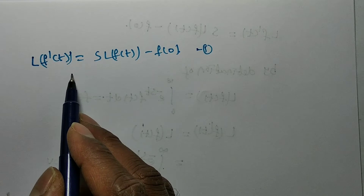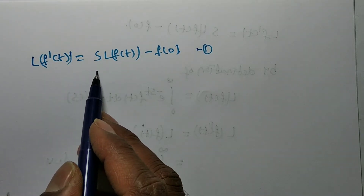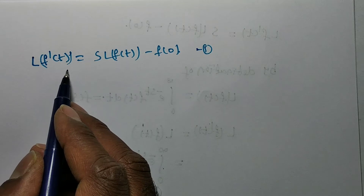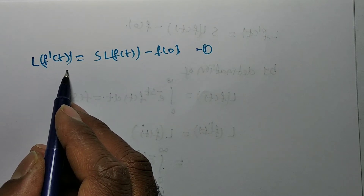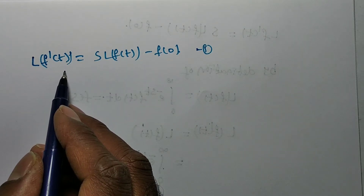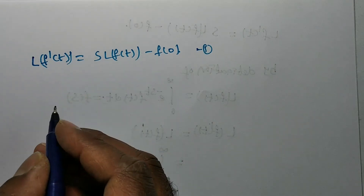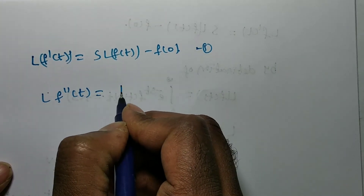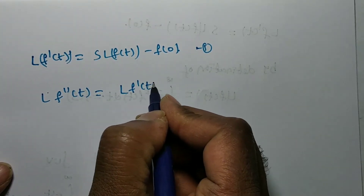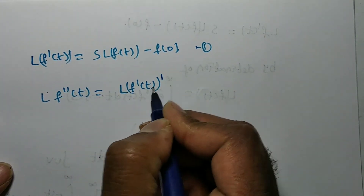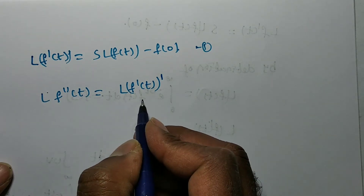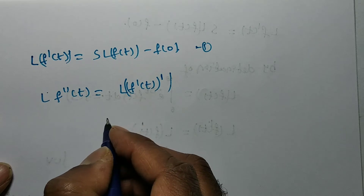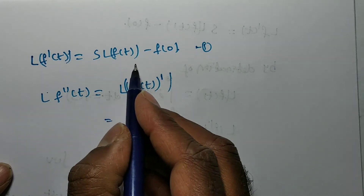Now we do the generalization. We have L{f'(t)} = s·L{f(t)} - f(0) as equation 1. For L{f''(t)}, write it as L{(f'(t))'}, applying equation 1 to the bracket: s·L{f'(t)} - f'(0).